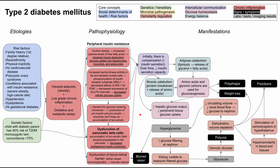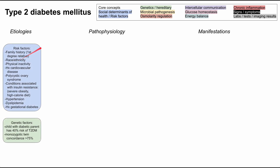This is a mechanism of disease map for type 2 diabetes. I'll be talking about the etiologies of type 2 diabetes, the pathophysiology, and the manifestations. In general, these categories will flow from left to right on this flowchart. All of the boxes in this mechanism of disease map are color-coded according to these core concepts and the legend up here, so you'll be able to keep them straight. First, let's start with the etiologies on the left. There's a long list of risk factors for type 2 diabetes.